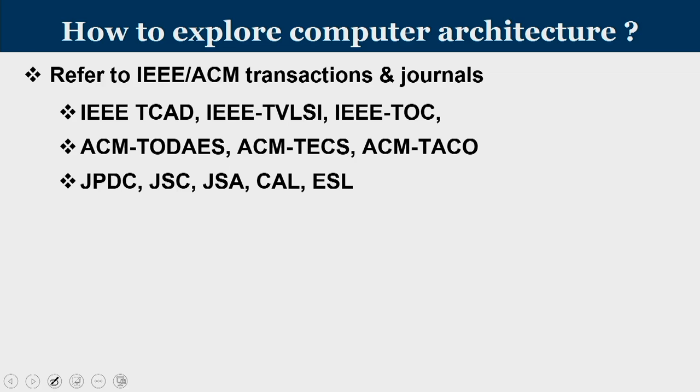To know further what is happening, with the base from this course, reading research materials will help. There are research articles published in peer-reviewed journals by professional societies, and peer-reviewed conferences conducted annually across different locations of the globe. If you want to explore computer architecture further, refer to IEEE or ACM — they are professional societies. Relevant journals include IEEE Transactions on Computer-Aided Design, IEEE Transactions on VLSI, IEEE Transactions on Computers, ACM Transactions on Design Automation of Electronic Systems, ACM Transactions on Embedded Computing Systems, and ACM Transactions on Architecture and Code Optimizations.